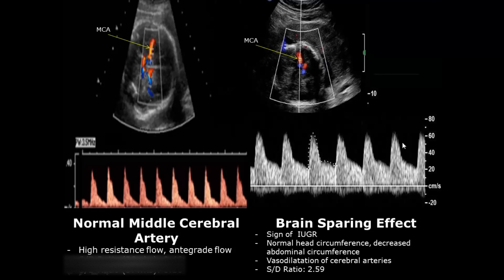In this abnormal case, the peak systolic velocity is high — more than 60 centimeters per second — whereas in the normal case it is below 40. The end-diastolic velocity is also high at more than 20 centimeters per second, whereas normally it is very low, approximately below 10 centimeters per second. The SD ratio is also elevated at 2.59 to 3.69.